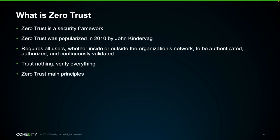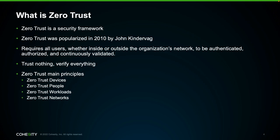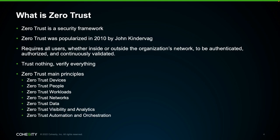Zero trust main principles. Today, I will be covering seven zero trust principles. Employing these seven principles can help mitigate risk exposure, maintain compliance, and avoid costly breaches. These are: zero trust devices, zero trust people, zero trust workloads, zero trust networks, zero trust data, zero trust visibility and analytics, and zero trust automation and orchestration.